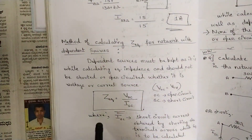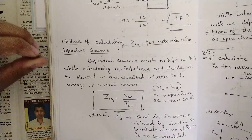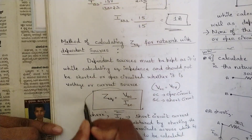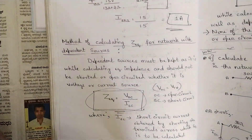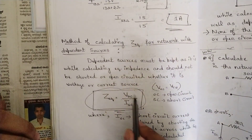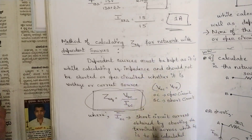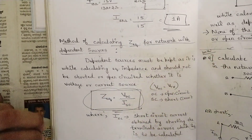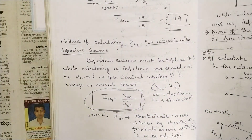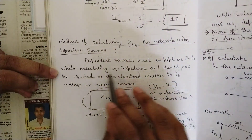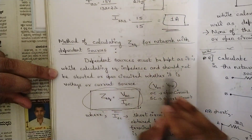Since we cannot eliminate the dependent source, we use the formula: Z-equivalent = Voc / Isc, where Voc is the open-circuit voltage and Isc is the short-circuit current obtained by shorting the terminals across which Z-equivalent is to be calculated. Dependent sources must be kept as-is while calculating equivalent impedance and should not be shorted or open-circuited, whether voltage or current source.